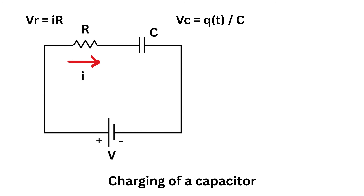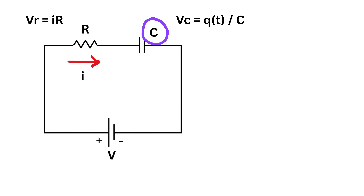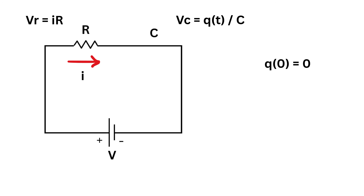We begin with the charging of a capacitor when it is initially uncharged. A DC voltage source is connected in series with a resistor R, a capacitor C, and a switch. At time T equals zero, we close the switch. Since initially the capacitor has no charge, it behaves like a wire. As time progresses, charge starts building on the capacitor. Let's assume that at some general time T, the charge on the capacitor is Q, and the current flowing in the circuit is I.